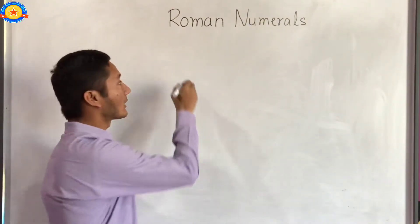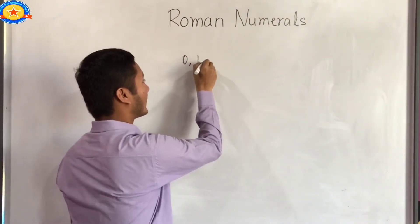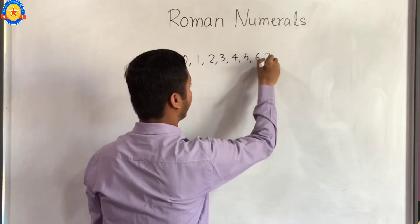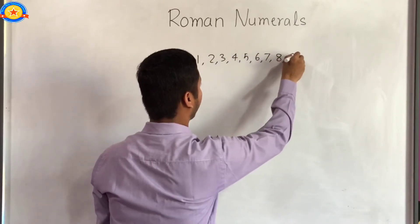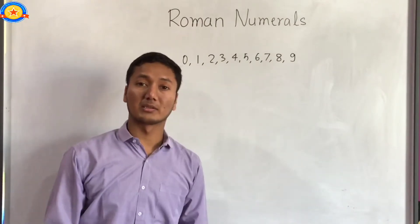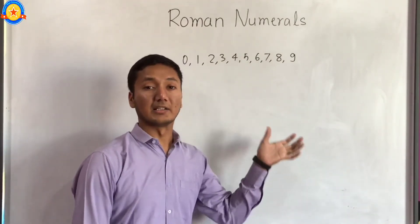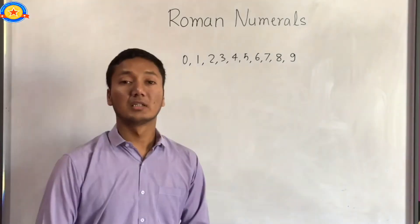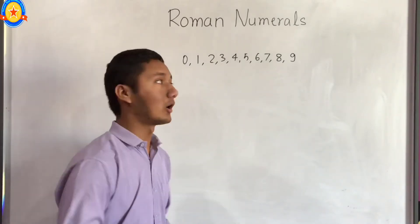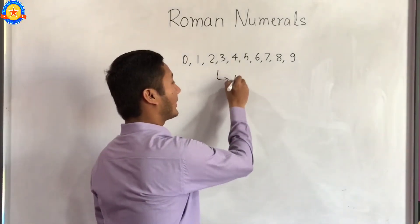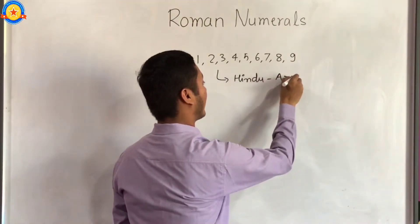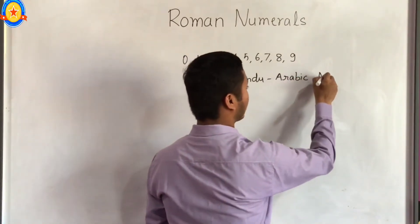Students, we know numerals like 0, 1, 2, 3, 4, 5, 6, 7, 8, 9. These numerals which we use in writing numbers are Indian in origin. But Arabs picked them up and spread them to Europe. That's why it is called the Hindu-Arabic numeral system.